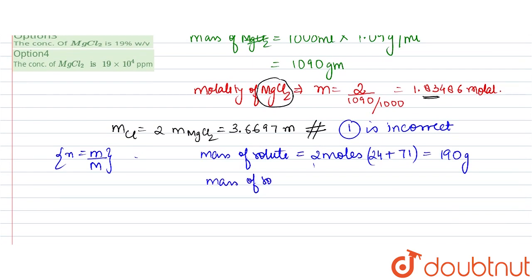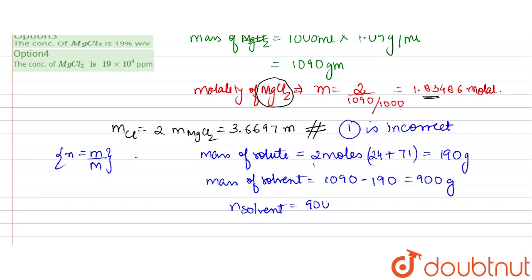Mass of solvent = mass of solution − mass of solute = 1090 − 190 = 900 grams. Number of moles of solvent (water, molar mass 18) = 900 ÷ 18 = 50 moles.